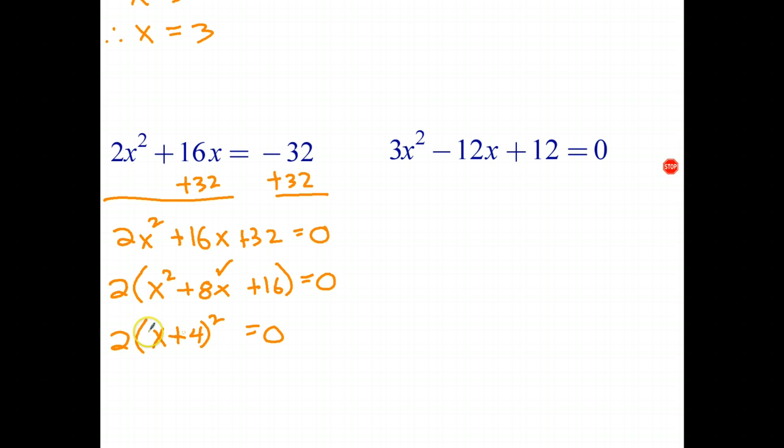Now we've got to solve this equation. Well, 2 can't equal 0. But x plus 4 can equal 0. So we write that down as our next step. And if that's true, then x must equal negative 4.